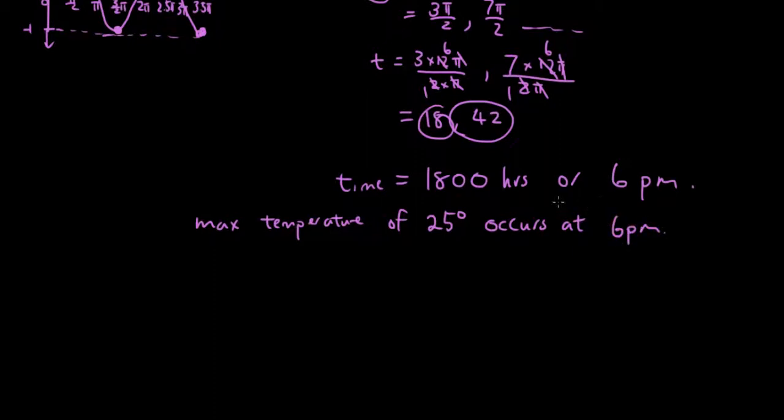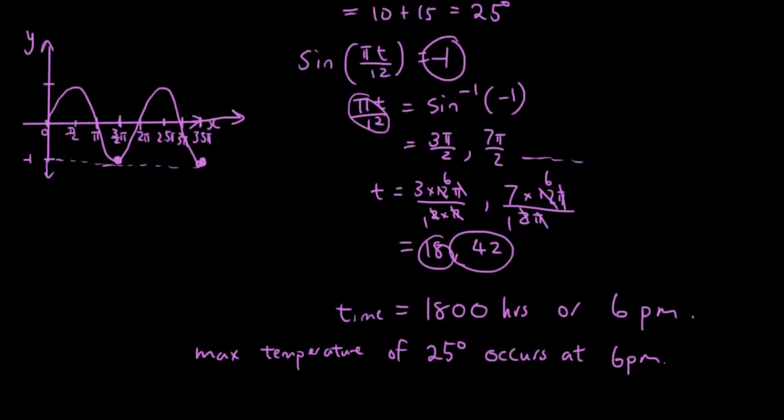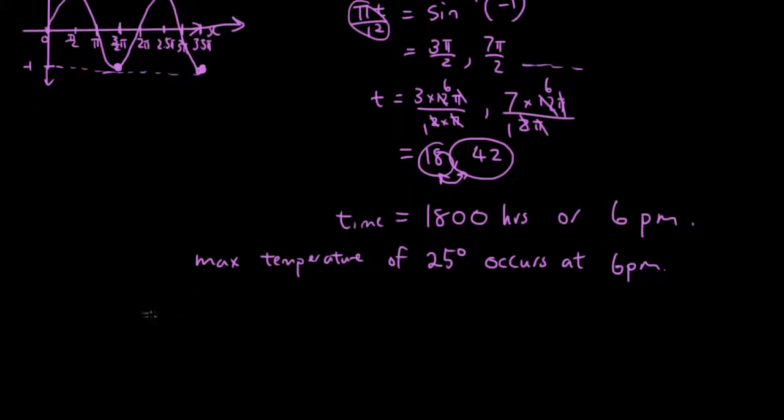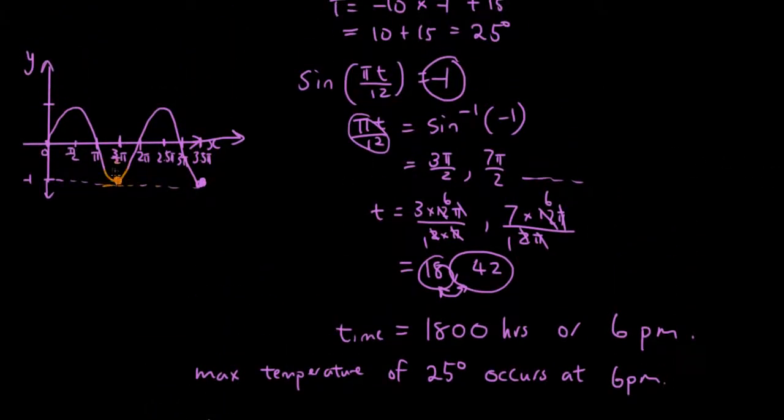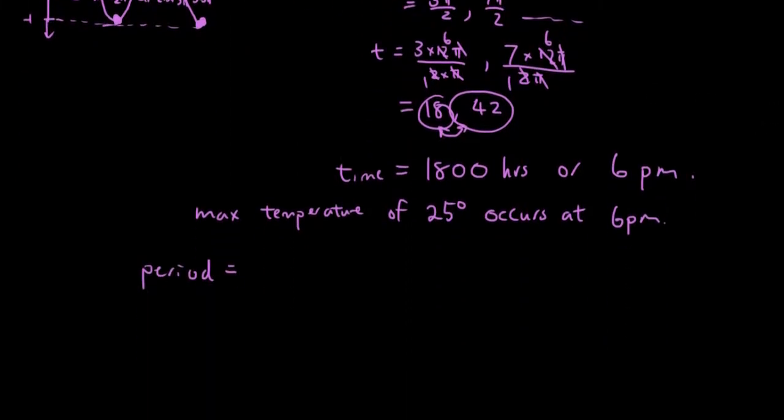Similarly, what is the time difference between the maximums, between the maximum temperature occurring? The period is equal to, from one minimum to another minimum, the time it takes between one minimum to another minimum is the period. So it's going to be 42 minus 18, which is 24 hours as the period.